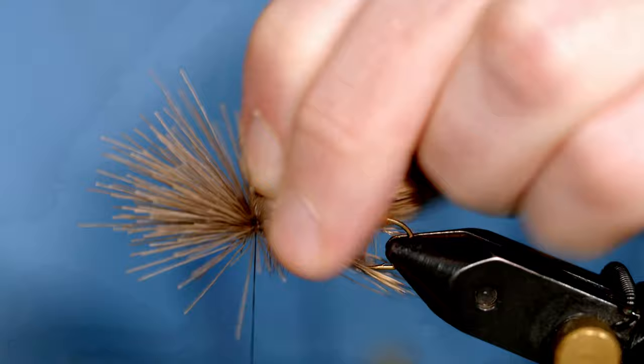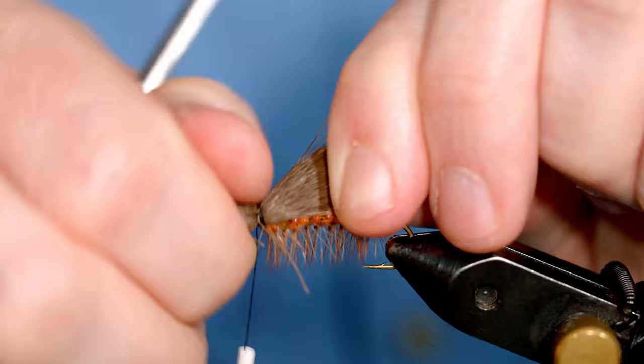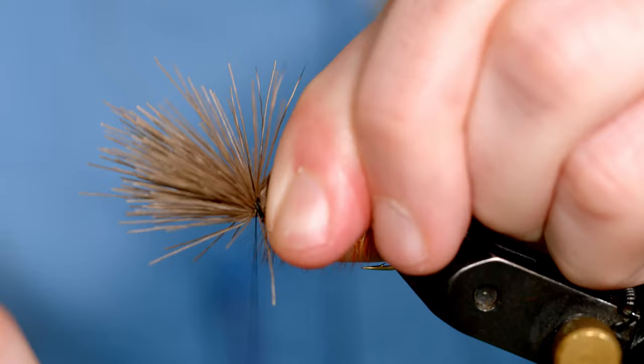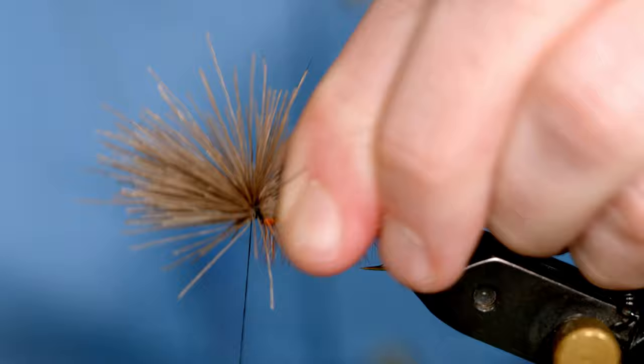We're going to do a couple more. Then when you come back to where you tied it in, you're going to do a couple loose wraps and tighten, a couple loose wraps and tighten, until that is secured to the hook.